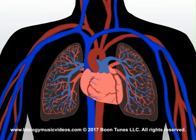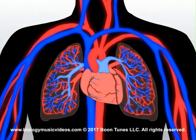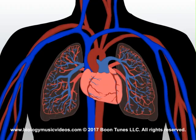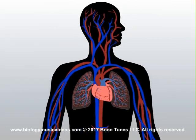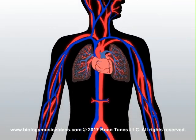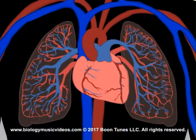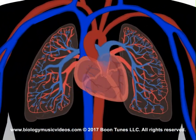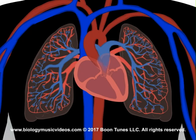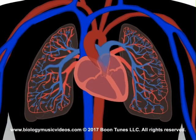The circulatory system's composed of the heart and vessels through which blood flows. This vascular network, in fact, contains arteries, capillaries, and veins. The heart's a muscle that actually has four different chambers internally.